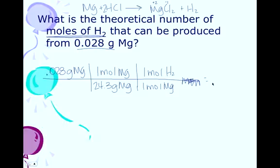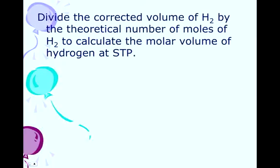Plug this into your calculator, and this works out to 0.0012 moles of hydrogen. Last pre-lab question. Take that corrected volume of hydrogen, which was 27.4 milliliters, and divide it by the theoretical number of moles, 0.0012, of hydrogen to calculate the molar volume of hydrogen at STP.